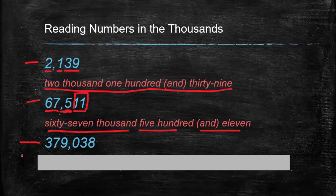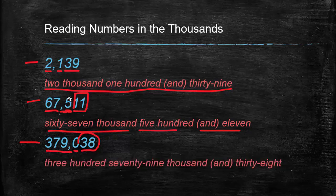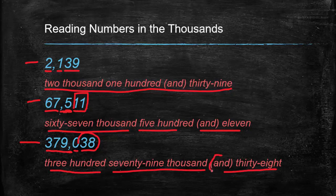Our final example: three digits here, so we're in the thousands — three hundred seventy-nine thousand. No hundreds, so we skip straight to thirty-eight. Three hundred seventy-nine thousand and thirty-eight. Or you can drop the 'and' and say three hundred seventy-nine thousand thirty-eight — that's fine too.